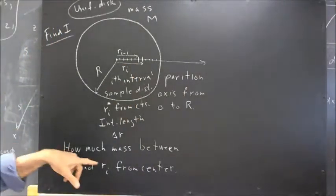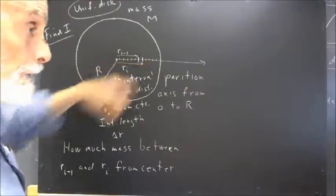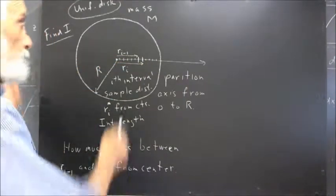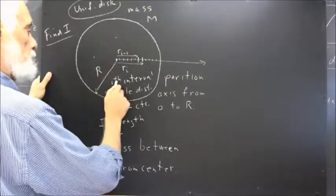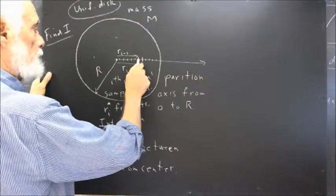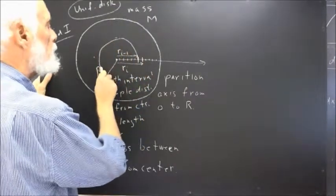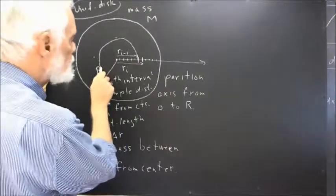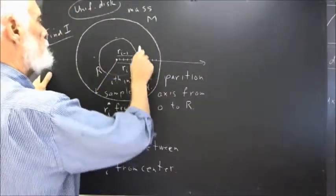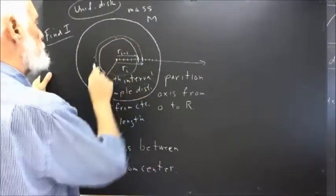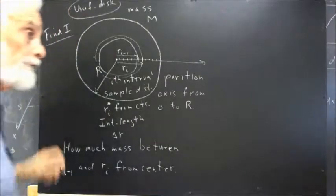Now, how much mass is between this distance from the center and this distance from the center? Well, how much mass is between, give me a little A here to draw a circle, is between this badly drawn circle and this one. In other words, how much mass in the ring.